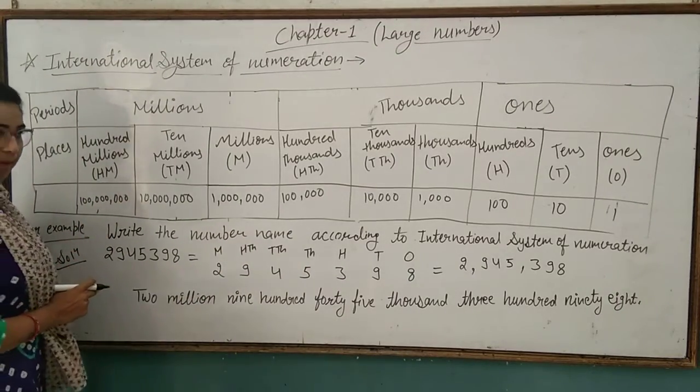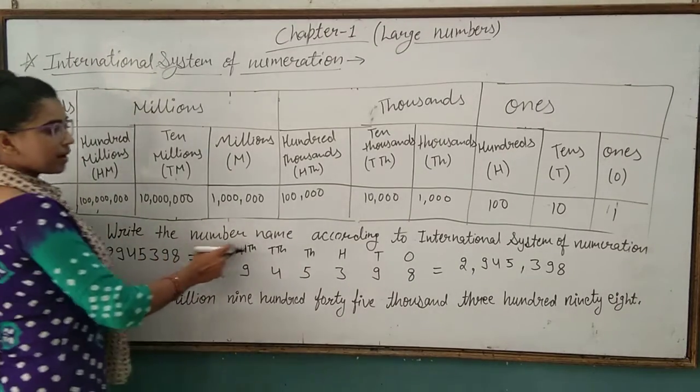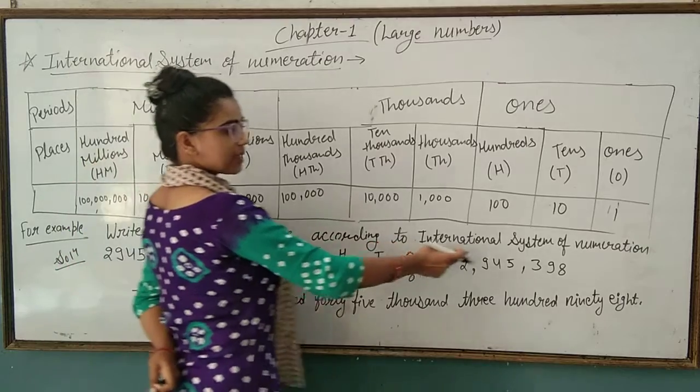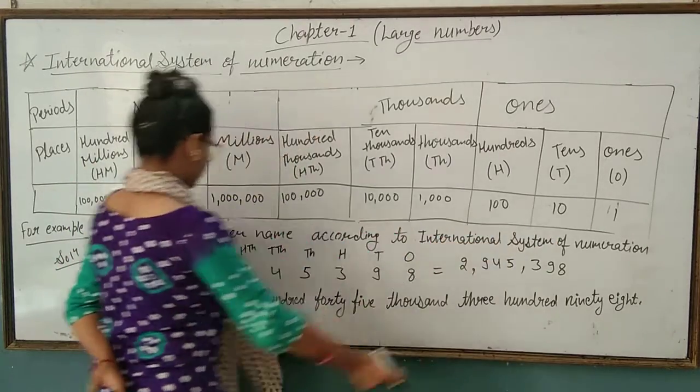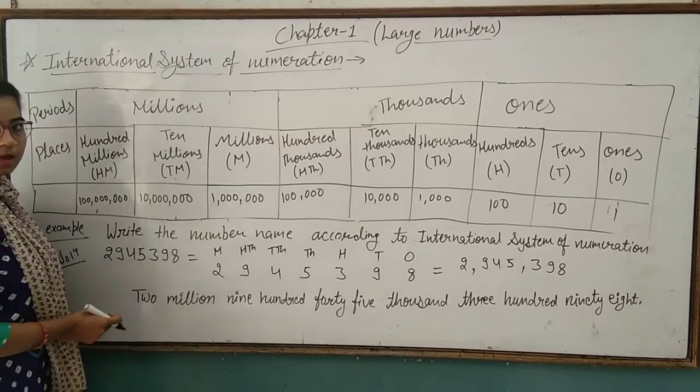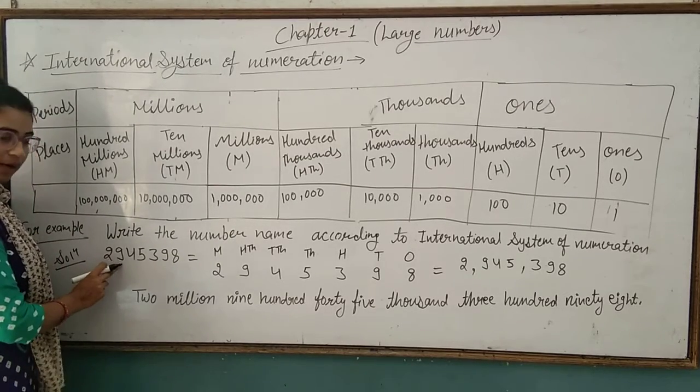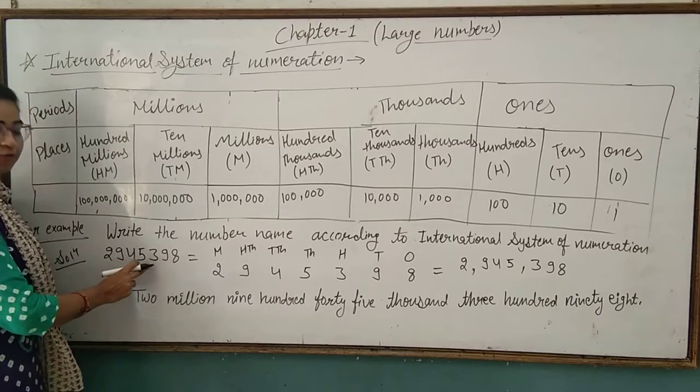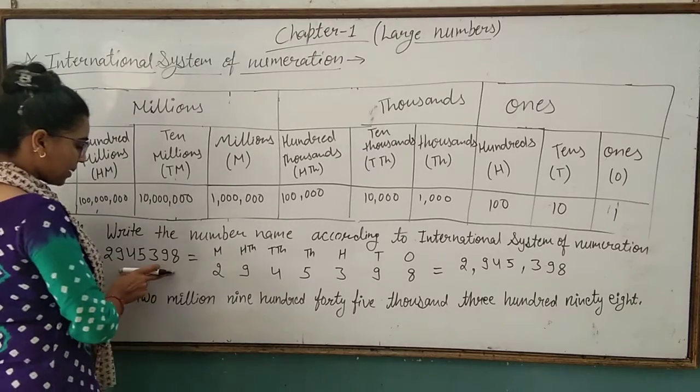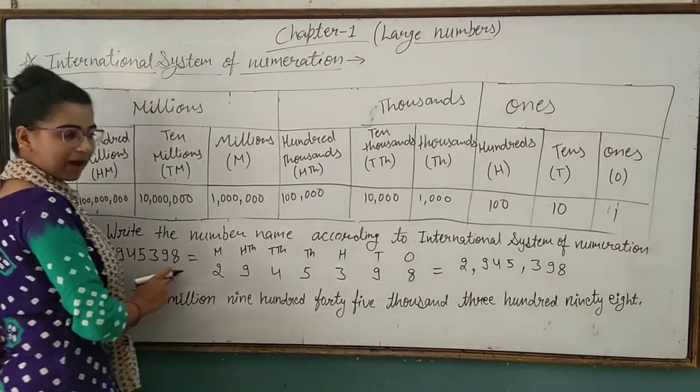Now we take an example. Write the number name according to International System of Numeration. The given number is 2,945,398. First we arrange this place value chart.